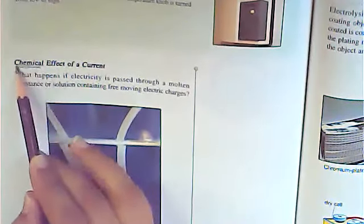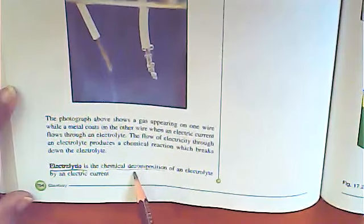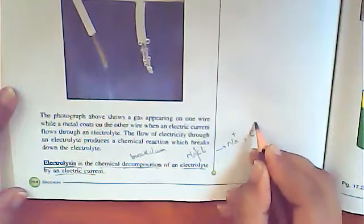Chemical effect of current: the most important example is electrolysis. You should know this definition as it can be asked in the question-answer section. Electrolysis is the chemical decomposition of an electrolyte by an electrical current. For example, electrolyte sodium chloride solution is broken into its components — sodium and chlorine (their respective positive and negative charges) — by using electric current. 'Electro' means electricity and 'lysis' means to break down, so electrolysis means to break something down with the help of electricity.